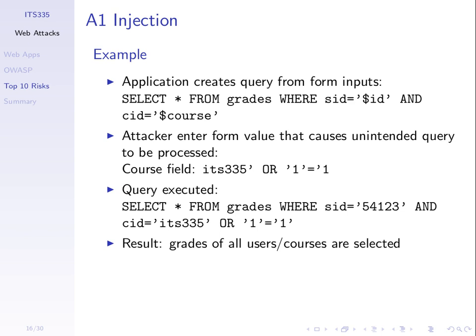$ID and $course come from the form. So once someone visits a website, they enter their student ID in a form field and the course ID in another field and press submit. The PHP takes those two values from the form and replaces $ID with the value the user entered and $course with the value they entered. But if a malicious user constructs input — in this case the course field — instead of just using a course ID like ITS 335, they construct a special string: ITS 335 single quote OR 1 equals 1.